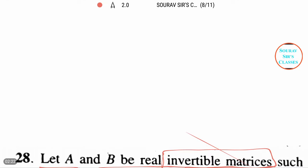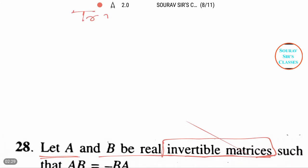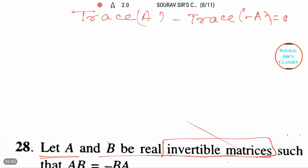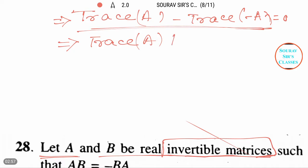The page is now adjusted. From the last step, trace(A) minus trace(minus A) equals zero. From this, we can write in the next step: trace(A) plus trace(A) equals zero, putting the plus sign instead of minus, so 2·trace(A) equals zero.